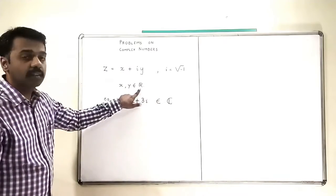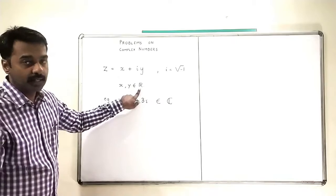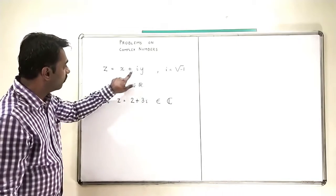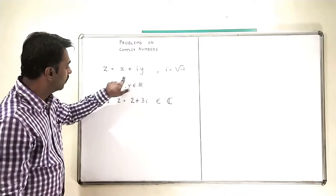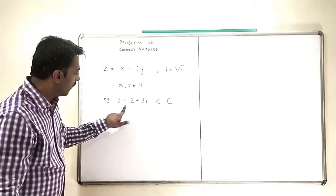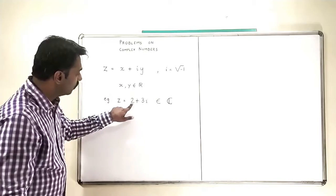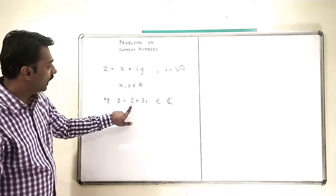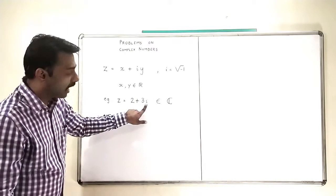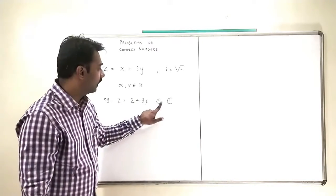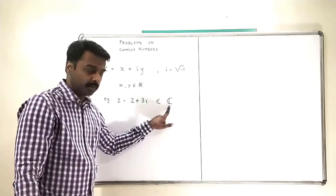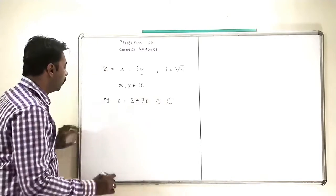R is the set of real numbers. So this X and Y, they should be real numbers. And the entire combination of X, Y with this i, that becomes a complex number.